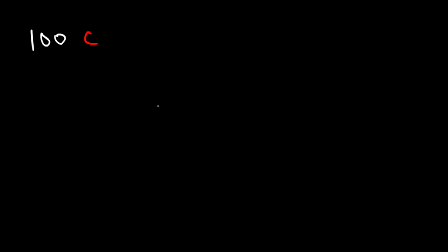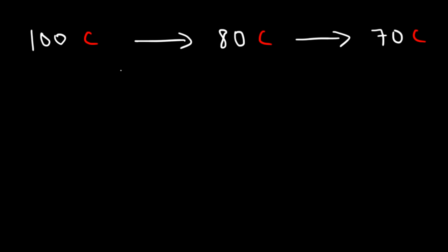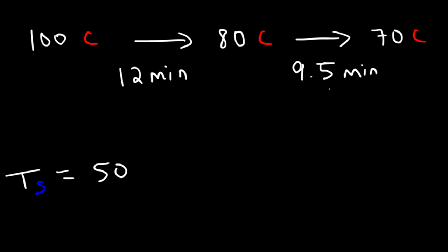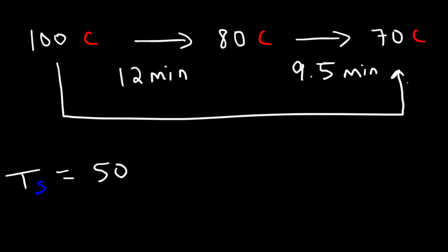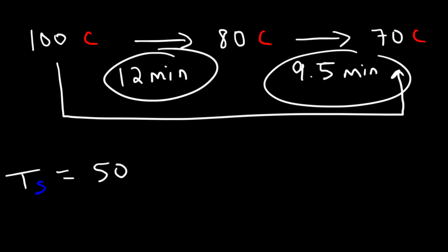Let's talk about what this means. We started at 100 degrees Celsius, the temperature decreased to 80 (used to find k), then decreased to 70. Going from 100 to 80 took 12 minutes, and going from 80 to 70 took 9.5 minutes. So how long from 100 to 70? It's simply the sum: 12 plus 9.5 equals 21.5 minutes.